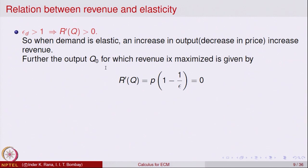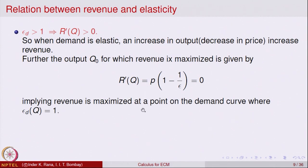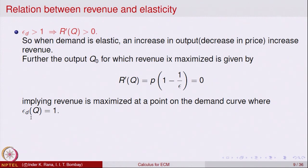Furthermore, at the output Q0 where revenue is maximized, R prime(Q0) must equal zero. Setting P times (1 plus 1/epsilon) equal to zero — and since P is positive — this requires epsilon equal to 1. Therefore, revenue is maximized at the point on the demand curve where the coefficient of elasticity of demand equals 1. That is the output level that will maximize revenue.